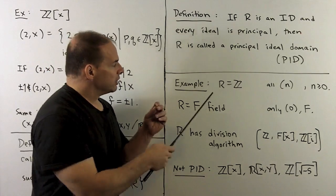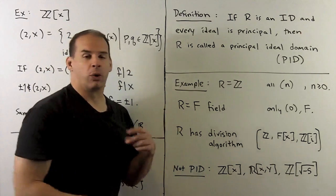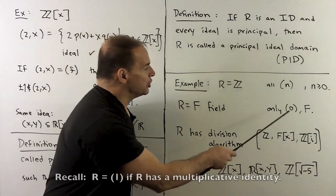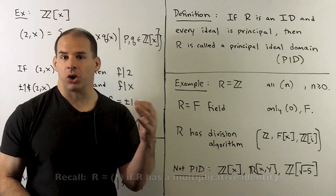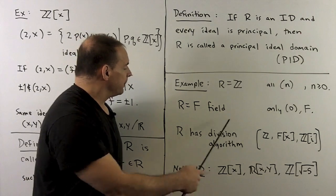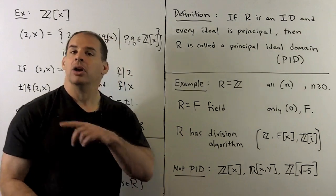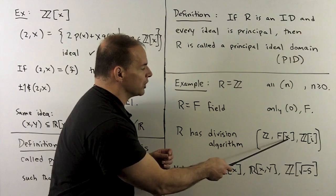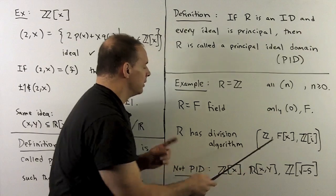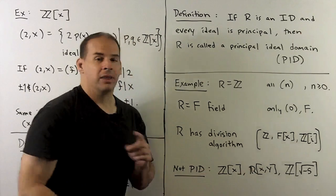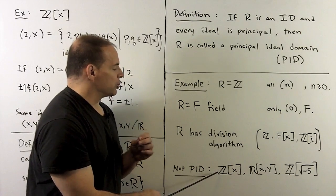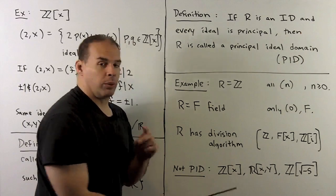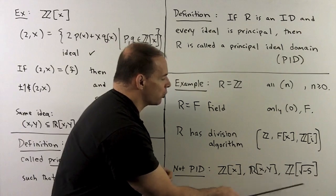For examples: we've seen that the integers form a PID. If we have a field, the only ideals are 0 and the field itself, so fields are always PIDs. We'll see shortly that rings with a division algorithm — like the integers, any field adjoined x (polynomials in x over a field), and the Gaussian integers — are going to be PIDs. Things that are not PIDs include ℤ[x], polynomials in x and y over ℝ, and, though we won't show it here, ℤ[√(−5)].